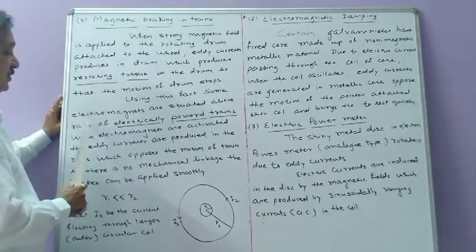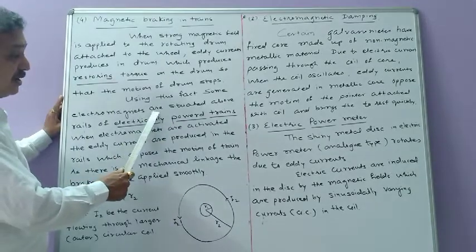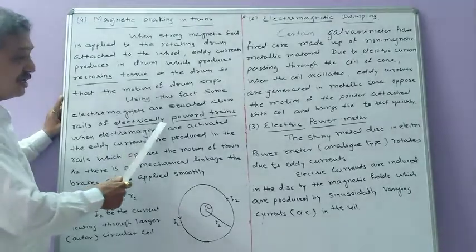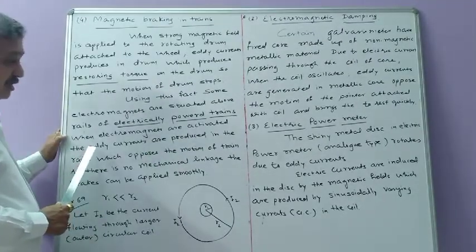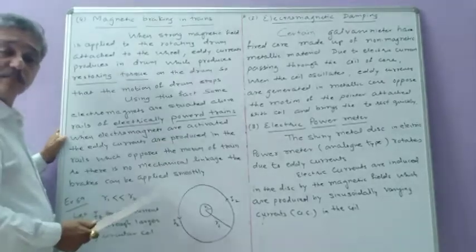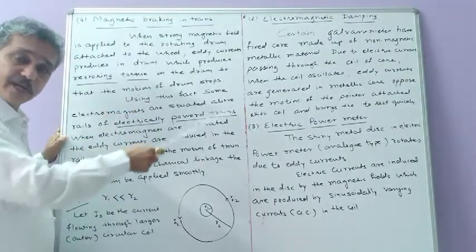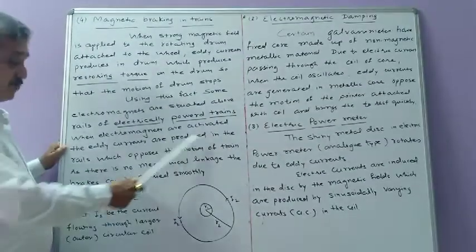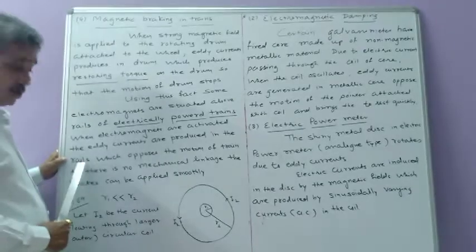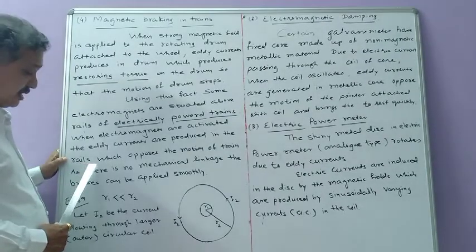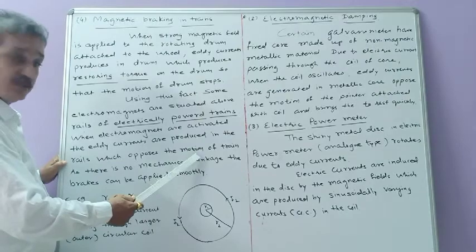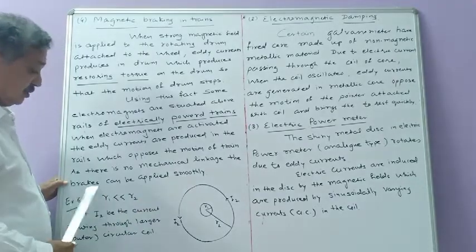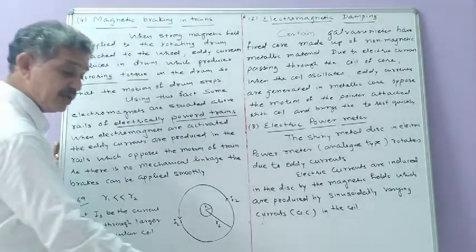Using this fact, some electromagnets are situated above the rails of electrically powered trains. When the electromagnets are activated, eddy currents are produced in the rails, and these eddy currents produce a restoring torque which opposes the motion of the train. As there is no mechanical linkage, the brakes can be applied very smoothly.